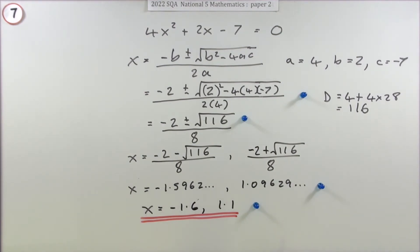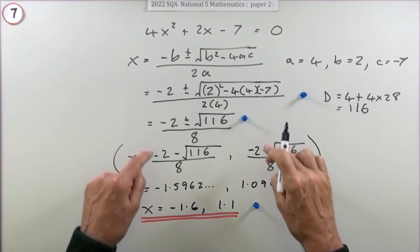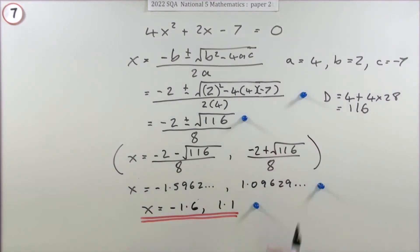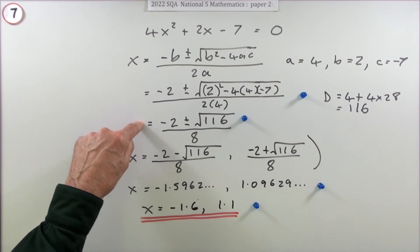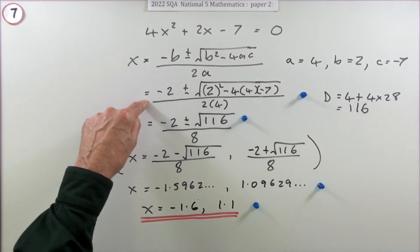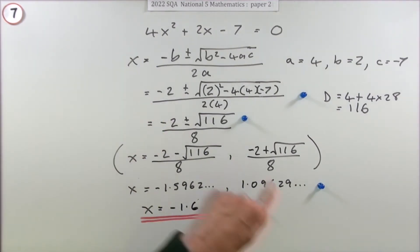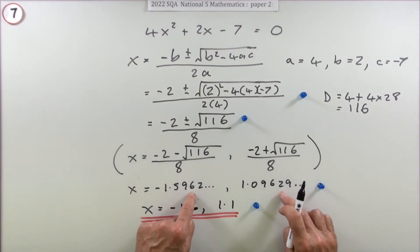That was straightforward for four marks. You wouldn't show this line—I've just put that in to show the two routes to the answer. Even this line was optional because once you've got this line, you could just press the buttons and get one answer, then the other. But you should really put down the unrounded values first and then round off appropriately.